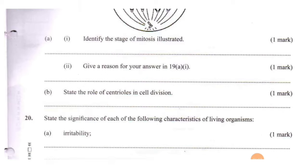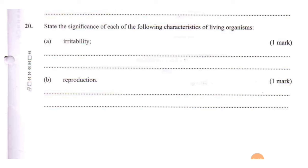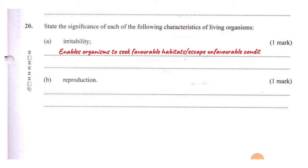Question 20: state the significance of each of the following characteristics of living organisms. Part A: irritability. Irritability enables organisms to seek favorable conditions and also escape unfavorable conditions. Part B: reproduction. Reproduction ensures continuity of species — it prevents extinction of species.